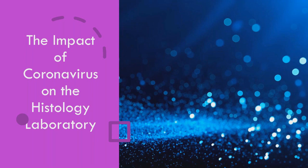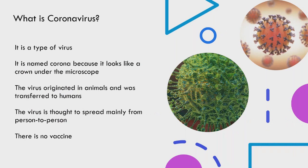Today we're going to talk about the impact of coronavirus in the histology laboratory. Viruses tend to be made up of RNA or DNA. The coronavirus is an RNA-based virus, and it is attracted to an ACE2 receptor — angiotensin converting enzyme 2 — which is an epithelial-based receptor located in your respiratory system: your nose, airways, and lungs. It is named Corona because it looks like a crown under the microscope, as you see in your slide.